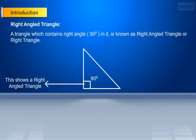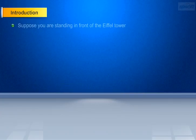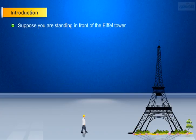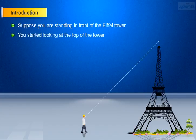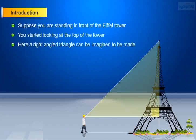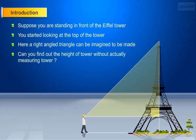The image shows a right angle triangle. Let us look into some examples that occur in our surroundings where right angle triangles are imagined to be formed. Suppose you are standing in front of the Eiffel Tower and you started looking at the top of the tower. Here, a right angle triangle can be imagined to be made. Can you find out the height of the tower without actually measuring it?